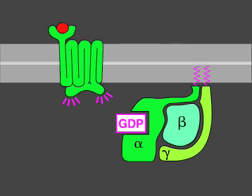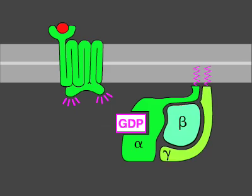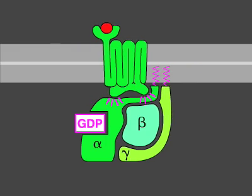In the absence of a signal, the alpha subunit has a GDP bound, and the G-protein is inactive. In some cases, the inactive G-protein is associated with the inactive receptor, while in other cases, as shown here, it only binds after the receptor is activated.